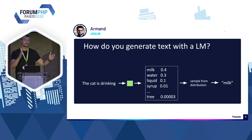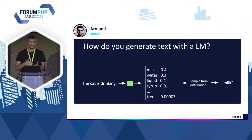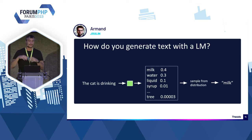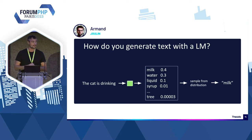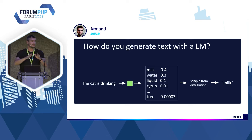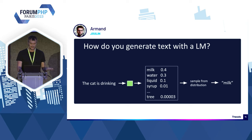Comment marche un LLM ? L'idée c'est de prendre un bout de texte et de le faire tourner dans le réseau de neurones. Le réseau de neurones va sortir un arbre avec des mots et leurs probabilités associées — quel est le mot le plus probable pour compléter cette phrase. Par exemple, 'the cat is drinking' : 40% de chance que ce soit 'milk', 30% que ce soit 'water'. On prend au hasard un mot en suivant les probabilités, on le rajoute avec les mots d'avant — 'the cat is drinking milk' — et on reprend ça dans la moulinette. Quand vous êtes sur ChatGPT et que vous voyez les mots apparaître un par un, c'est parce que littéralement on prend la phrase, on la fait tourner, il y a un nouveau mot, il l'envoie au front — et ainsi de suite jusqu'au résultat. C'est surprenant mais c'est hyper efficace.